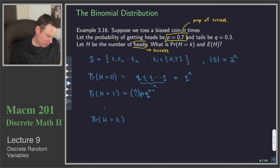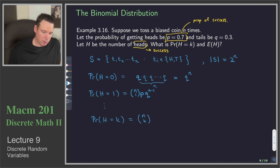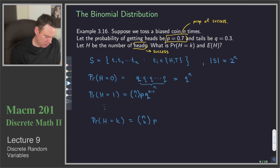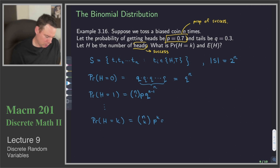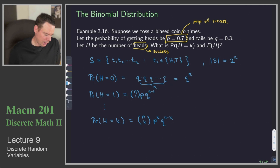Now we can generalize this result. The probability that k heads appear: we figure out how many possibilities there are for the locations of those k heads — that's n choose k. Once a location is chosen, we need heads to appear in each of the k spots with probability p, so that's p to the k, times q to the n minus k for the tails in the remaining n minus k spots. And so there's our probability that k heads will appear.